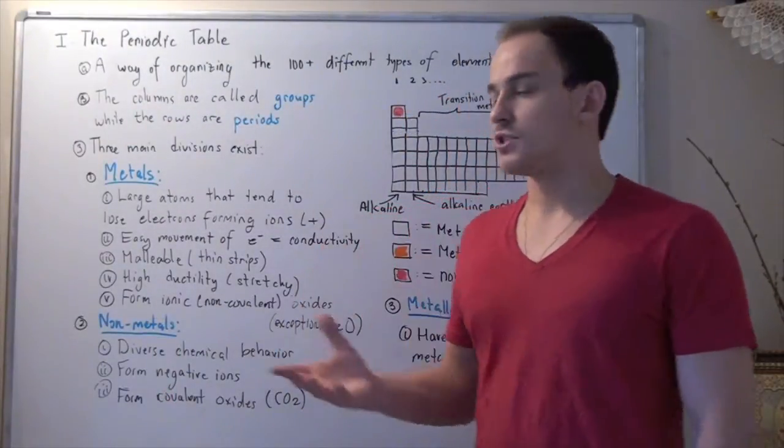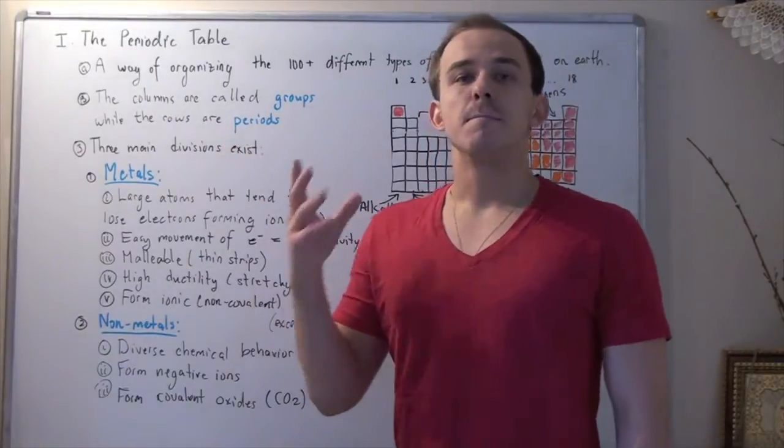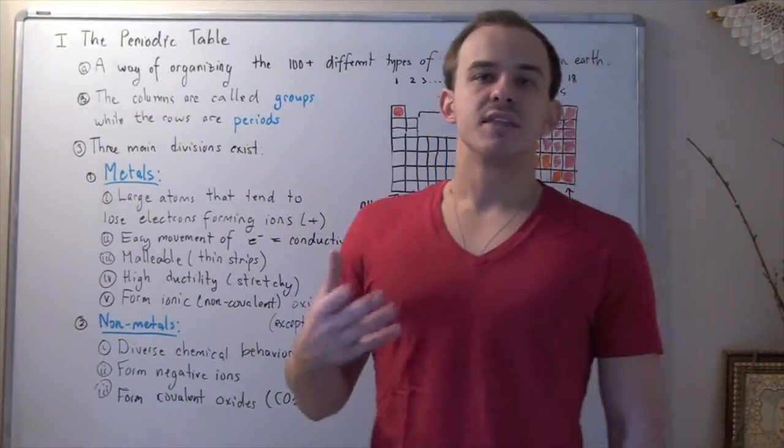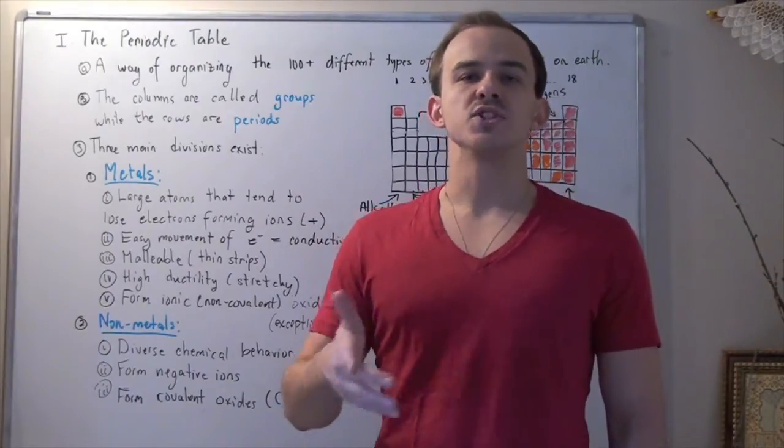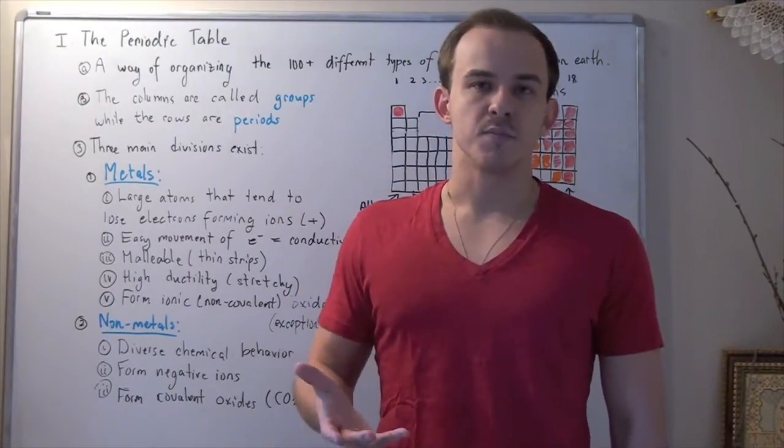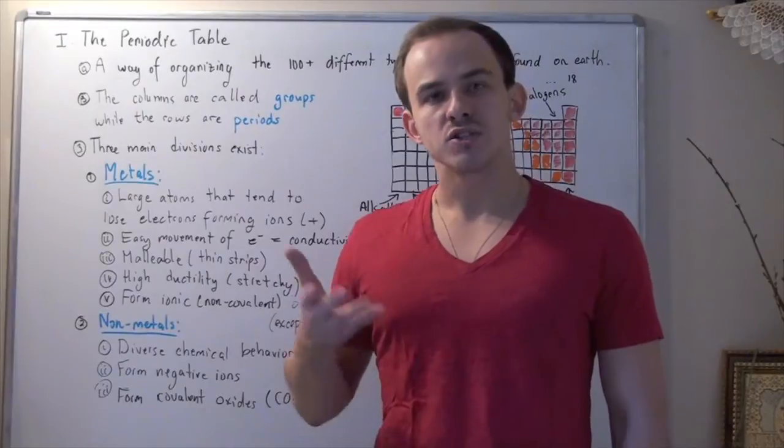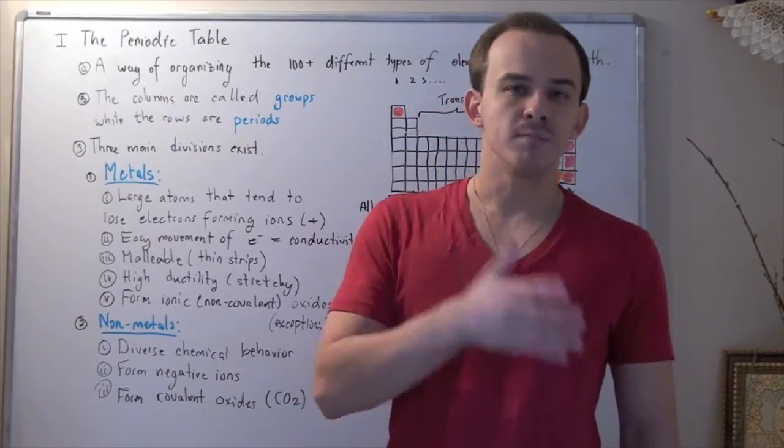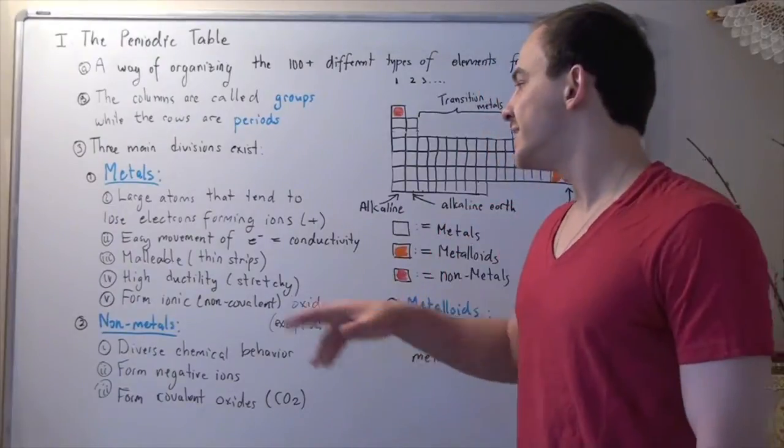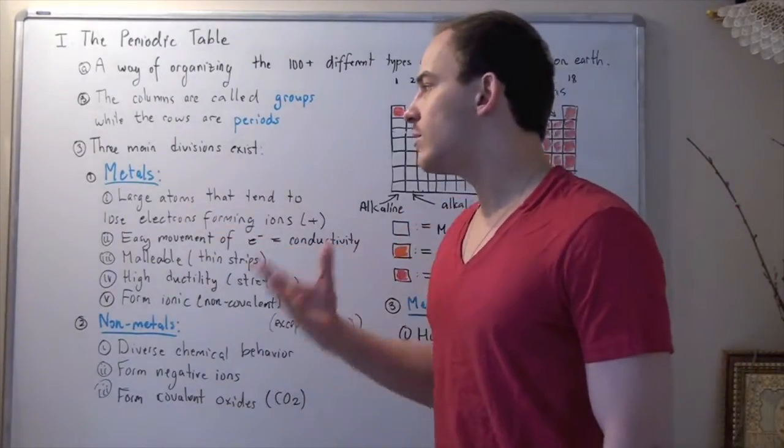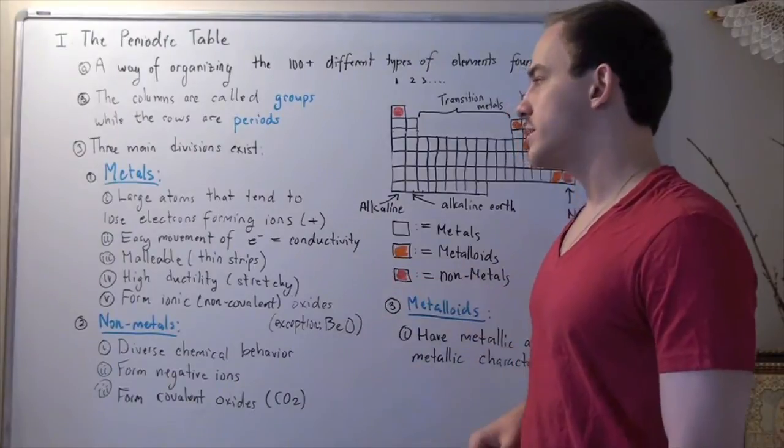Now let's examine our divisions. Let's look at the metals. Metals are large atoms that tend to lose electrons with great ease, forming ions in which the oxidation state is positive. Now, within a metal, electrons move with great ease from one point to another, and that means our metals are able to conduct electricity very well.